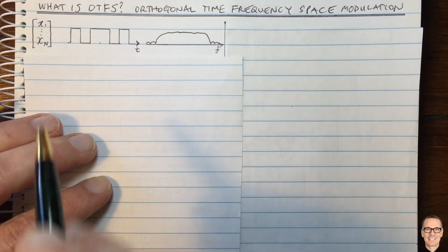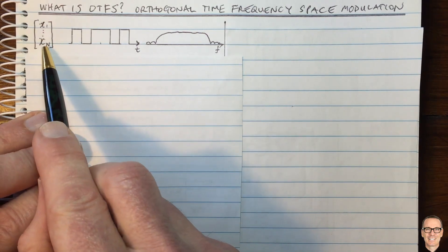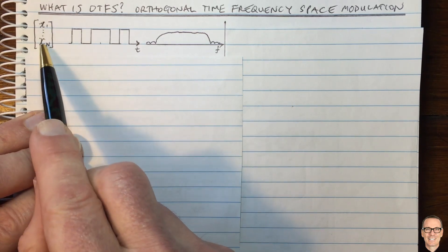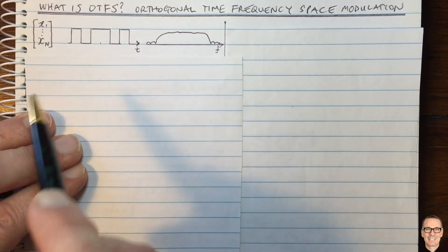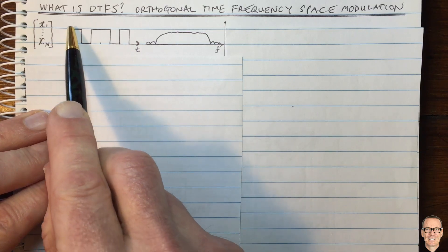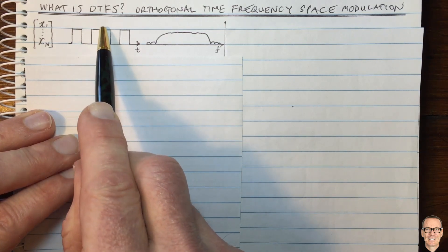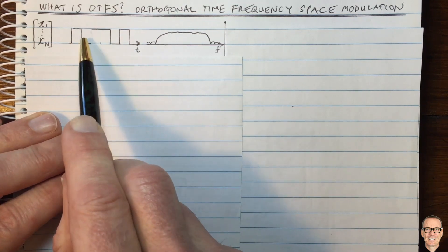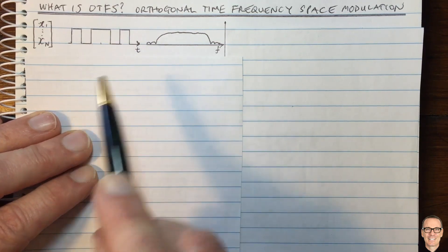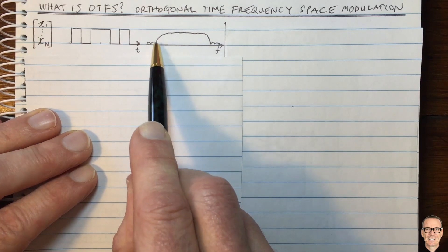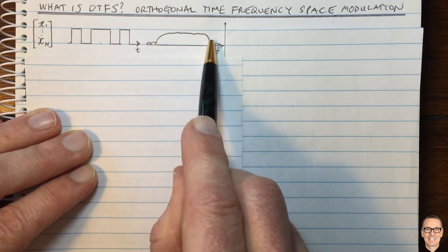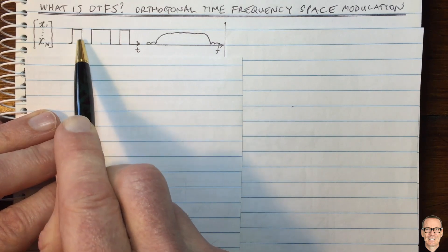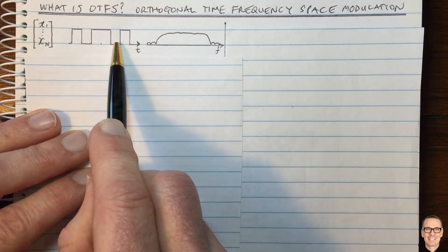Let's look at direct modulation. Here we've got input data in a vector — the data bits that you want to send, x1 to xN. If we do direct modulation, we send them as data in a time sequence where we send one data bit at a time. In the frequency domain, this is a spectrum with a sinc pulse shape because of the shape of this square function.